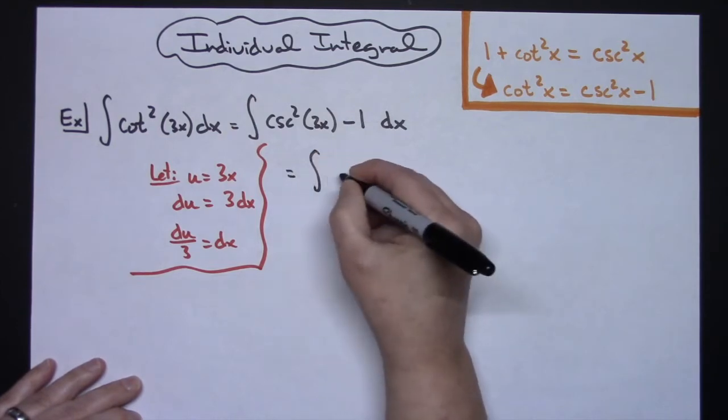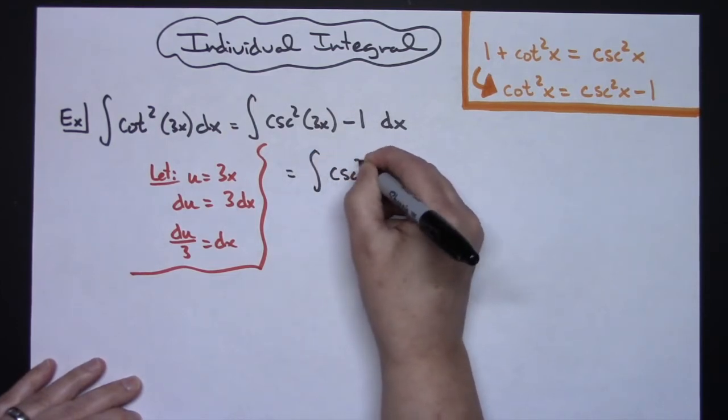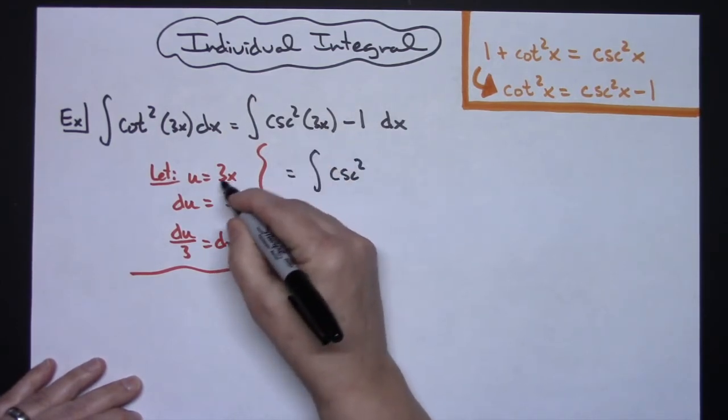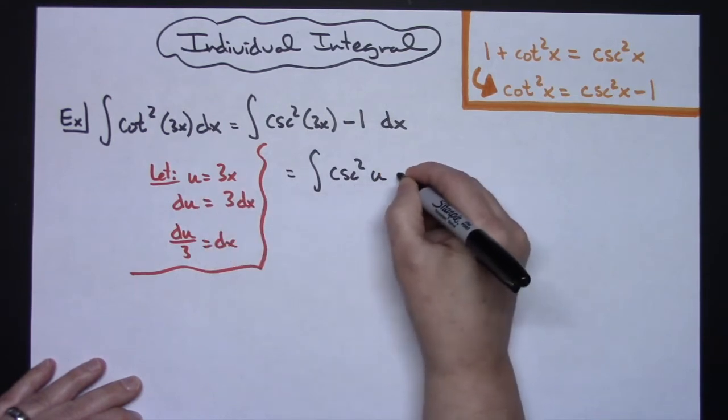So we're going to have the integral cosecant squared. I'm going to replace the 3x with the u minus 1.